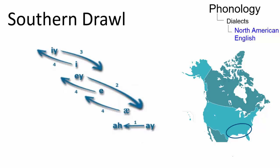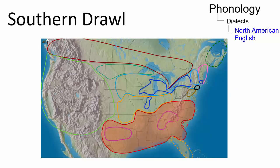The tensing and upgliding of the short front vowels is a defining sound shift that creates the regionally distinct southern vowel present in the southern United States.